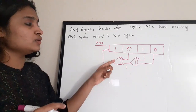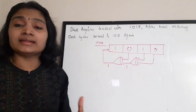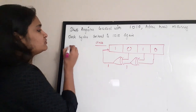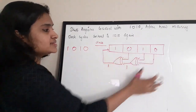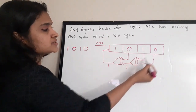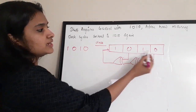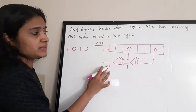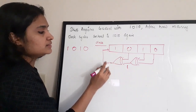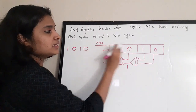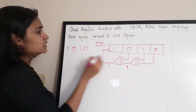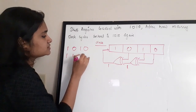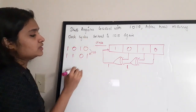To find the answer, trace the shift register content at each clock cycle. The circuit XORs the two last bits and loads the result as the new first bit, shifting remaining bits right. Starting from 1 0 1 0: XOR of last two bits (1 and 0) = 1, so after the first clock cycle the content becomes 1 1 0 1.